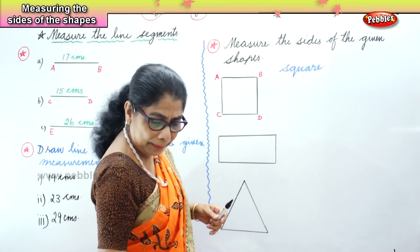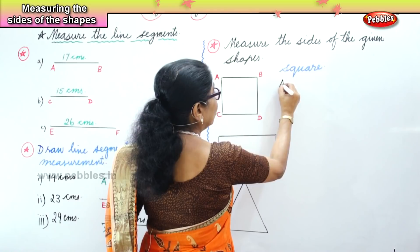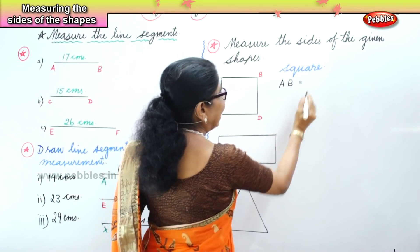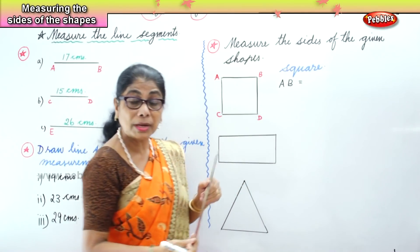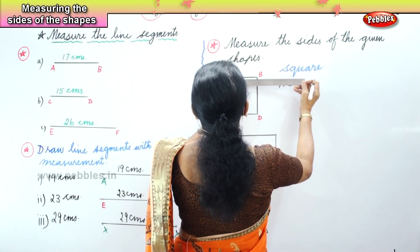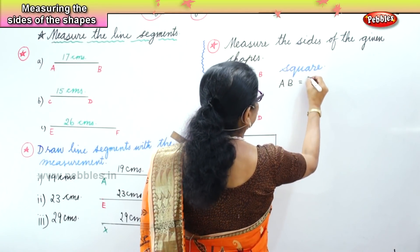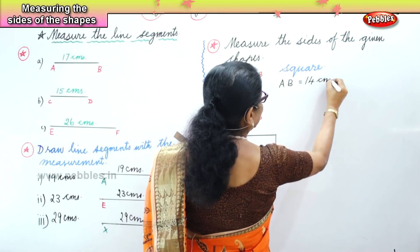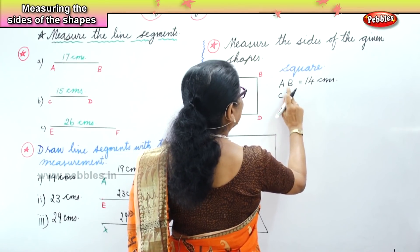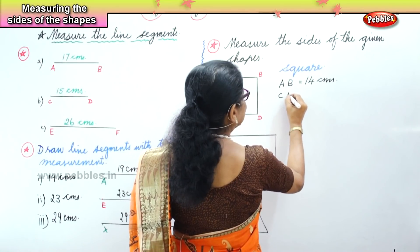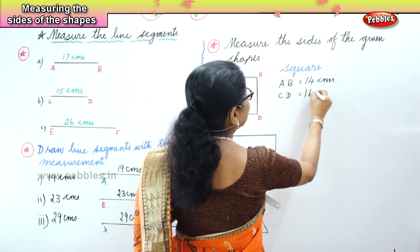Now you are going to measure the line segment. Measure the sides of the given shape. We are going to measure AB and find out how many centimeters. Take your ruler, put the zero on point A and check — it is 14 centimeters. Then you measure CD. Let's measure the CD line segment in this square — that is also 14 centimeters.